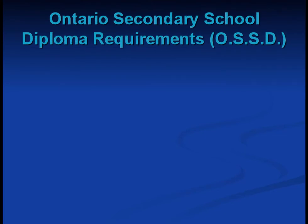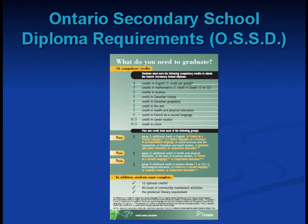Ontario Secondary School Diploma Requirements — what do you need to graduate? You will require 18 compulsory credits as listed. In addition, students must complete 12 optional credits, 40 hours of community involvement activities, as well as the provincial literacy requirement.